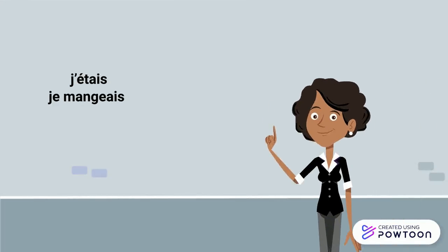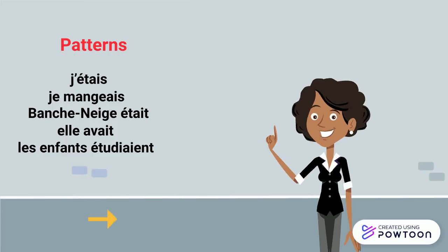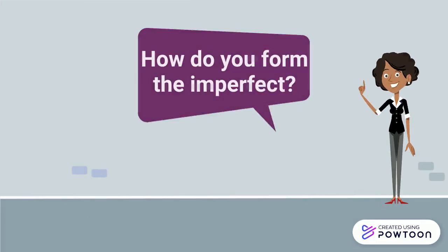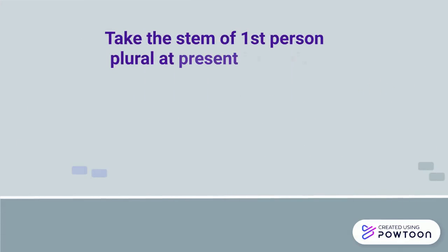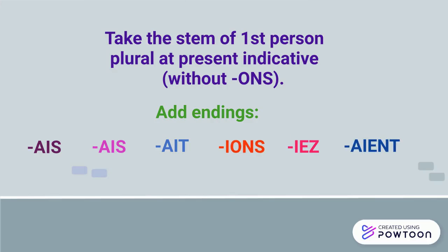By now you may have noticed some patterns in the formation of the imperfect, notably the ending in -AI. But concretely, how do you form the imperfect? Take the stem of the first person plural at the present indicative without -ONS, and add the endings: -AIS, -AIS, -AIT, -IONS, -IEZ, -AIENT.